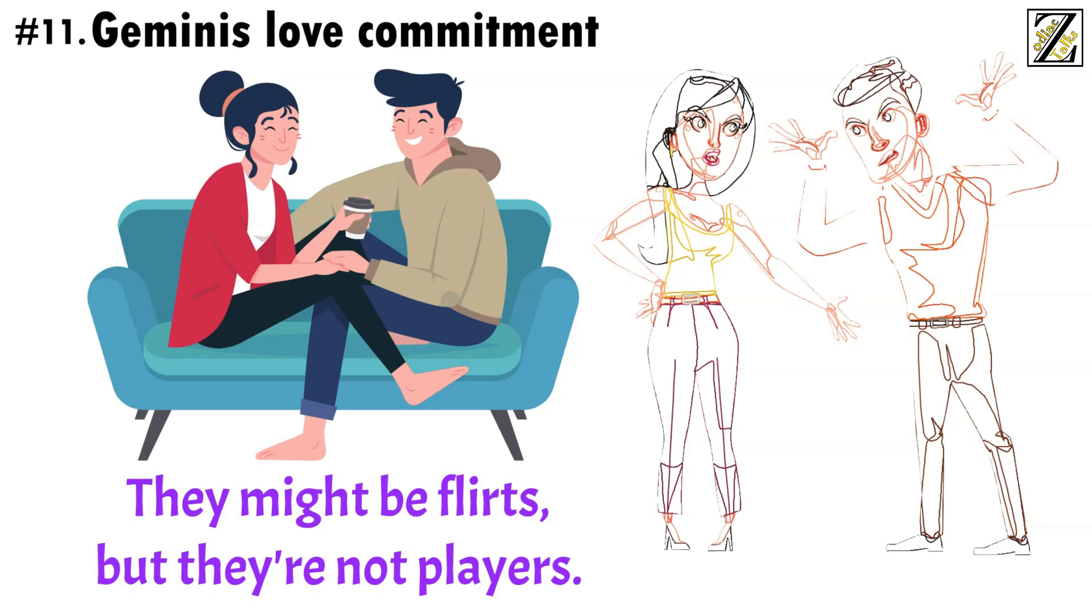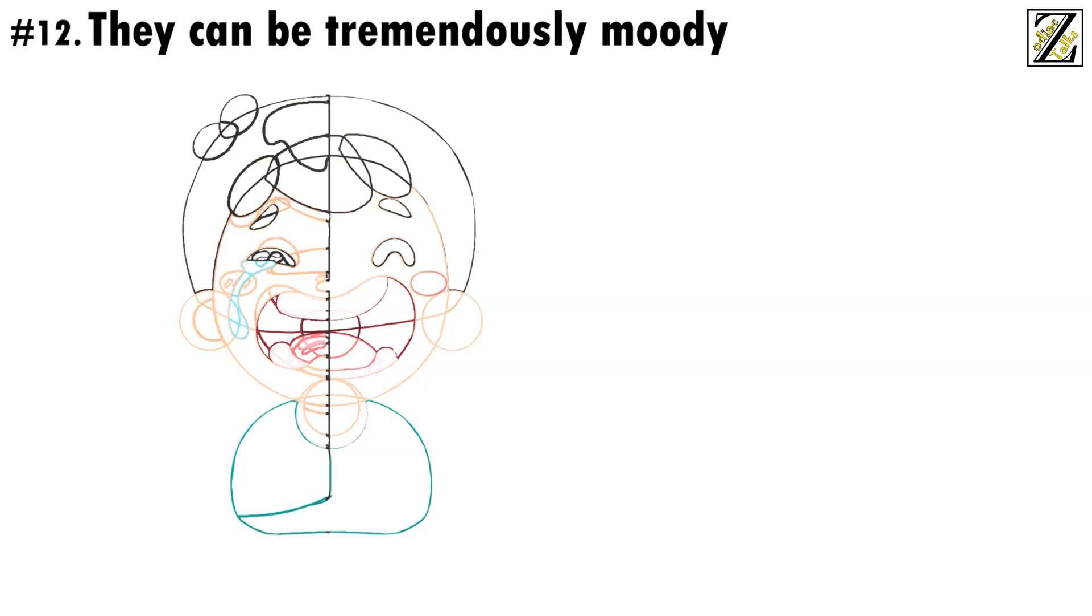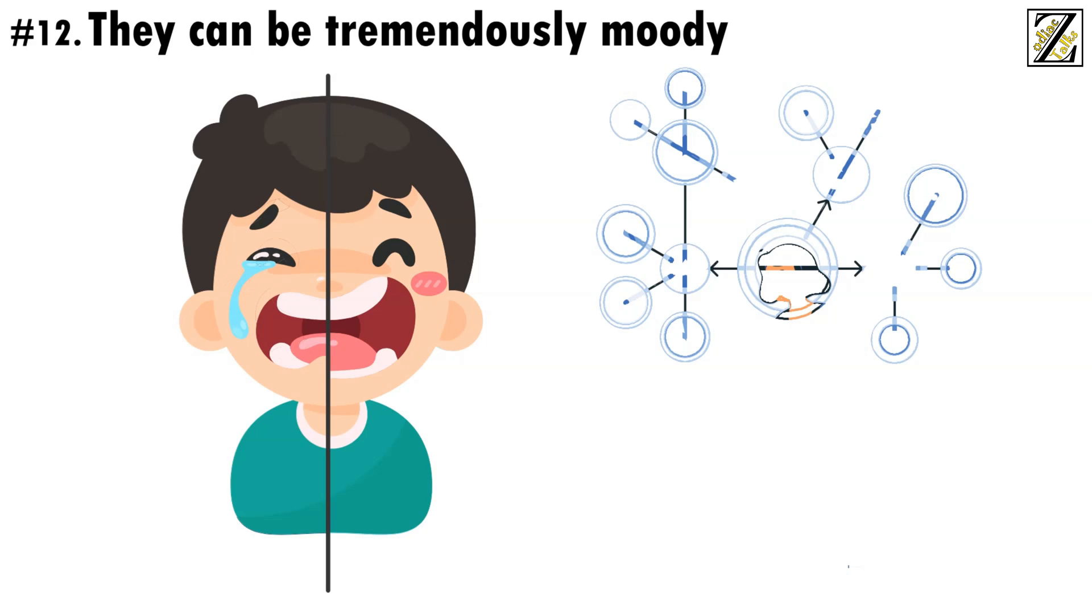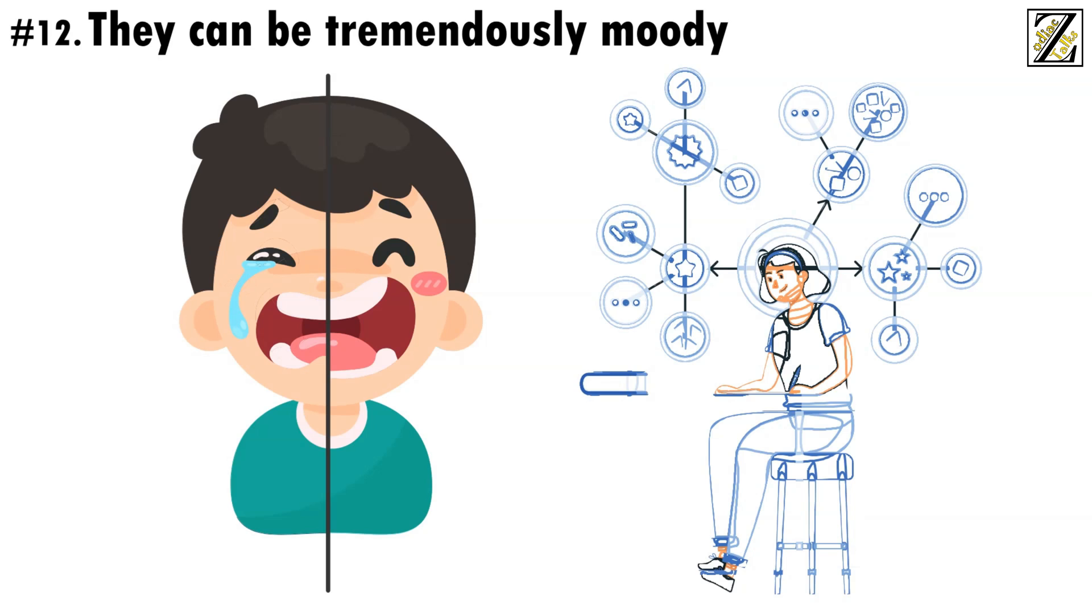Number 12, They can be tremendously moody. While Geminis are pretty relaxed individuals, the truth is that they can be quite moody, often going from happy to sad and sad to happy with seemingly no warning whatsoever. It can all be traced back to their overthinking. They're not just changing their mood out of the blue, but instead based on conclusions they've reached while overthinking everything under the sun.